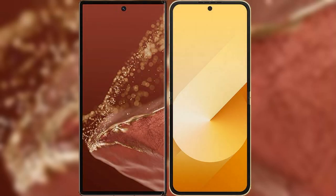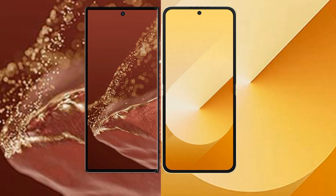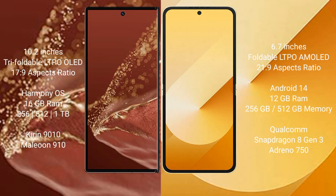I will compare the new Wahabamate XT Ultimate with Samsung Galaxy Z Flip 6. Wahabamate XT Ultimate has a 10.2 inches triple foldable LTPO LED display with a screen-to-body ratio of 17.9. Samsung Galaxy Z Flip 6 has a 6.7 inches foldable dynamic LTPO AMOLED display with a screen-to-body ratio of 21.9.